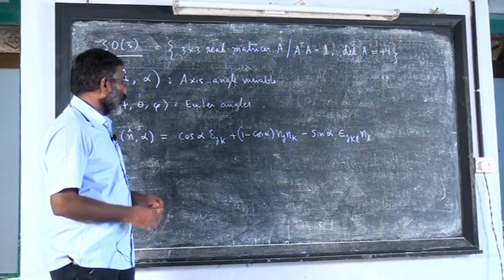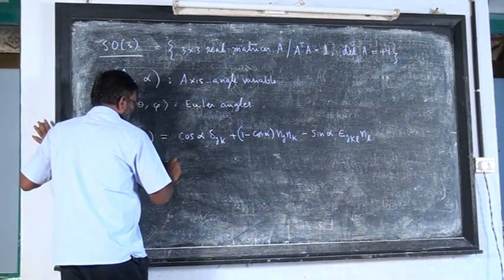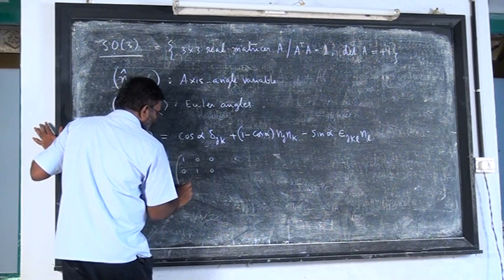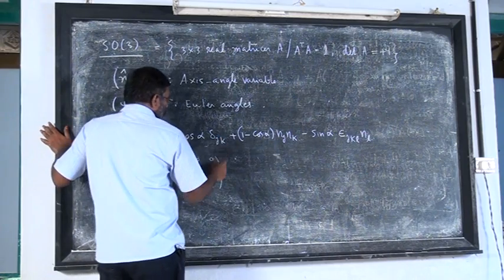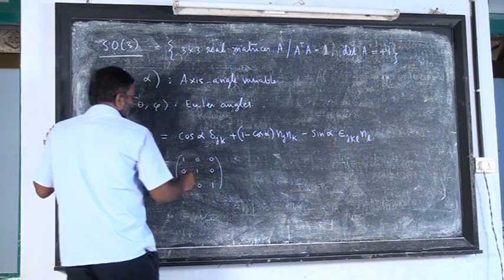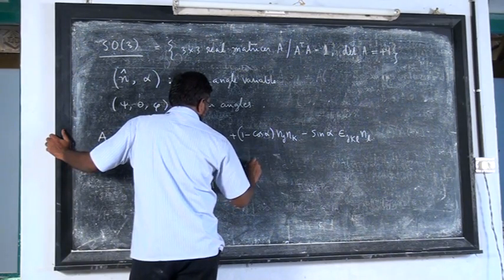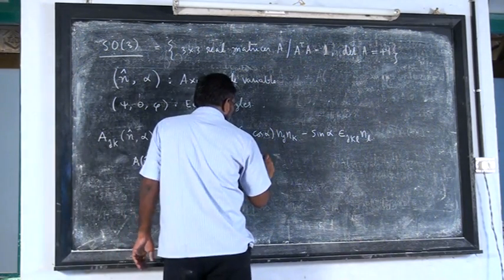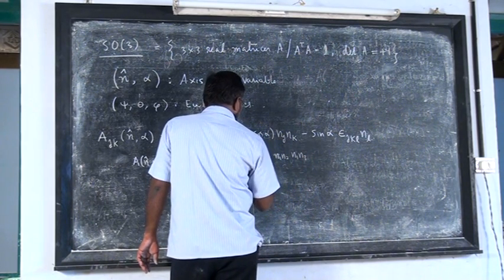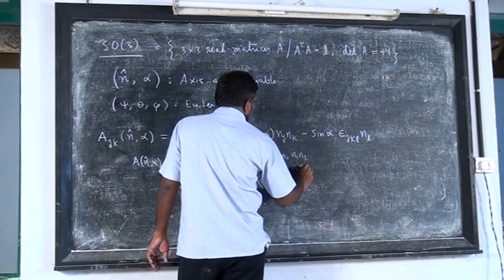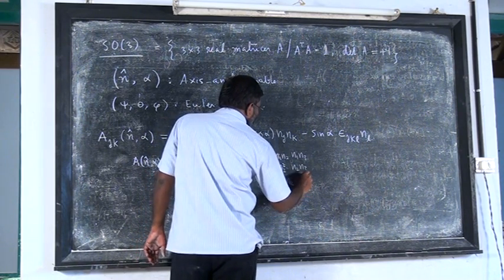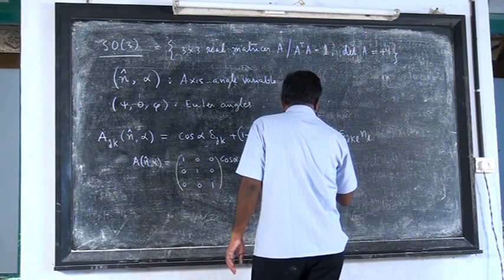Essentially, what does this mean? It means the first term is a matrix like [1 0 0; 0 1 0; 0 0 1] — that is delta_jk — so the matrix A(n, alpha) equals cos(alpha) times identity, plus (1 - cos(alpha)) times the outer product matrix with elements n1², n1n2, n1n3, n2n1, n2n3, n2n3², and so on.